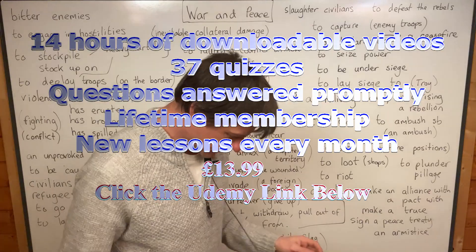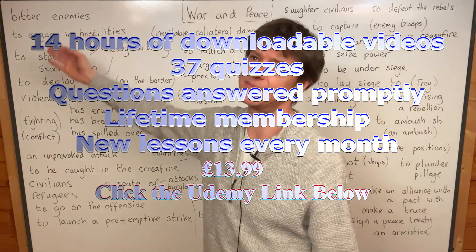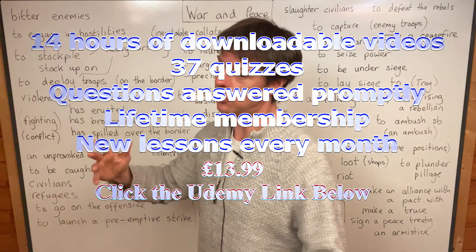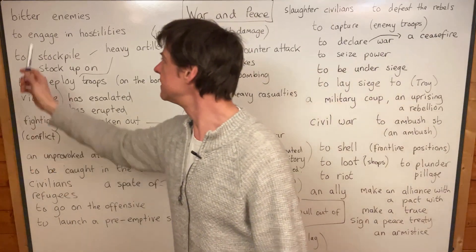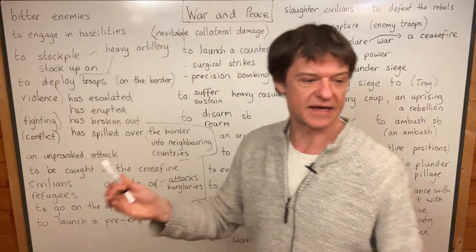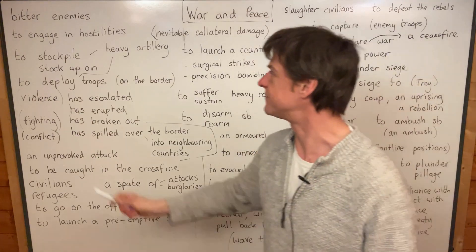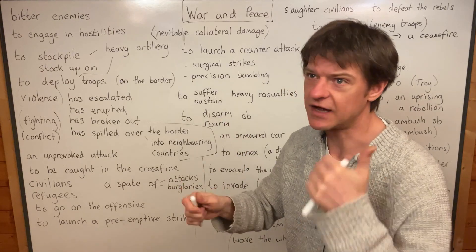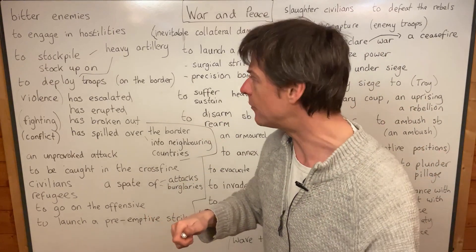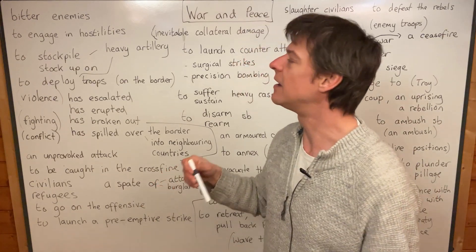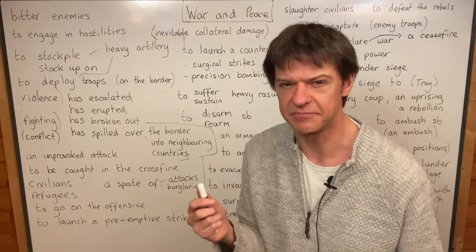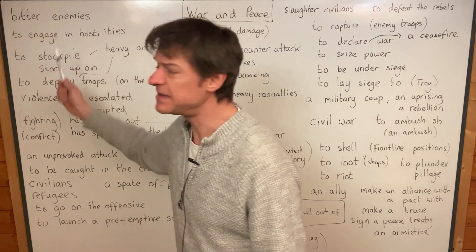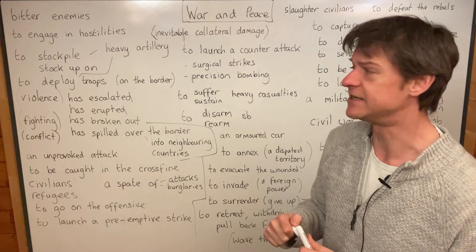Let's start at the beginning: bitter enemies. This is where it all starts. Any kind of war starts with two or more bitter enemies. Bitter is used as an adjective here to make it clear that the two enemies really hate each other. It's actually a form of taste — you have salt, sweet, bitter, sour, the four forms of taste. But when you talk about somebody feeling bitter, it means they're really resentful, really angry about something. If you are bitter enemies, you hate each other with a passion.